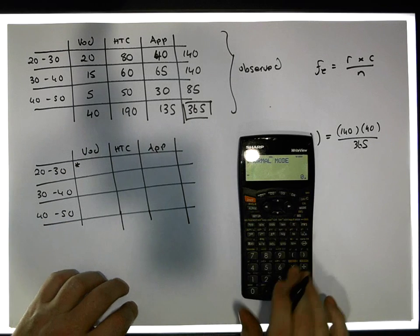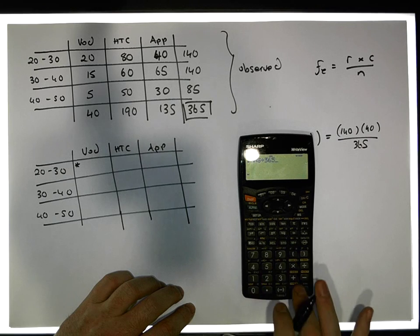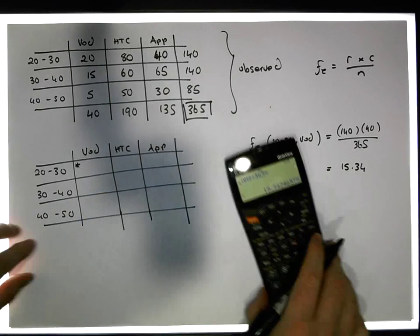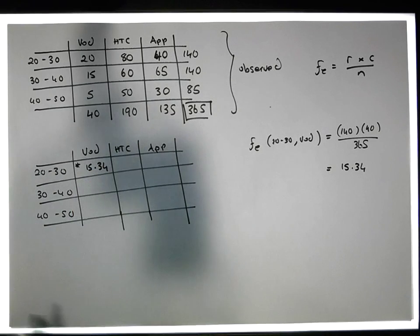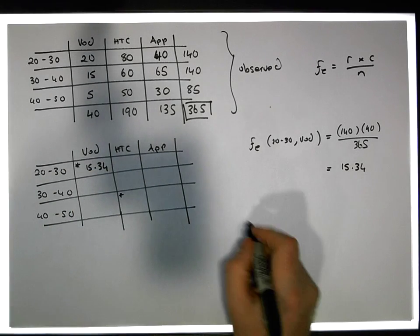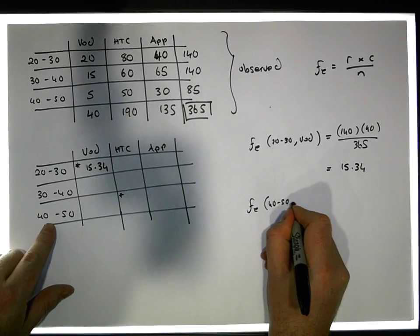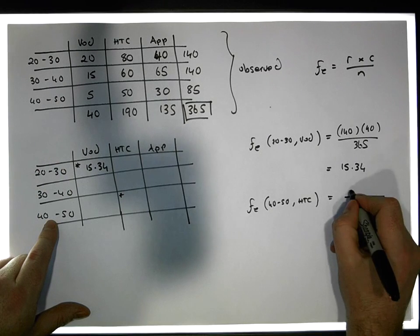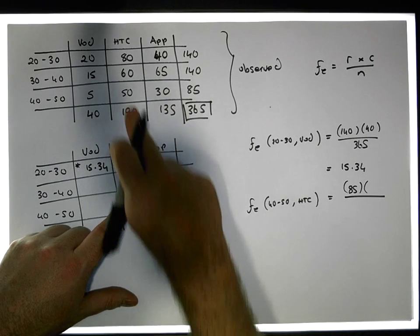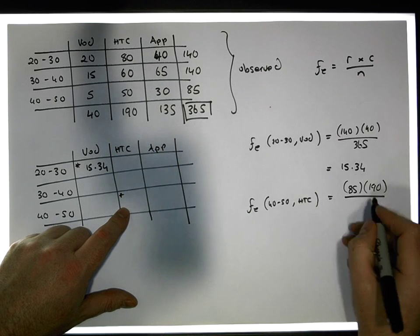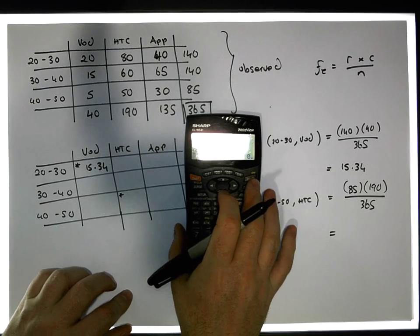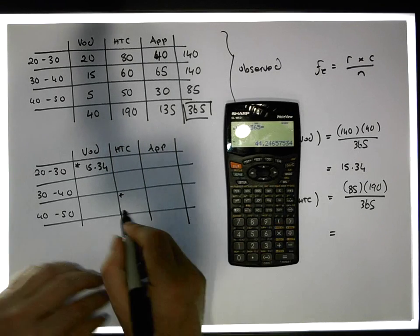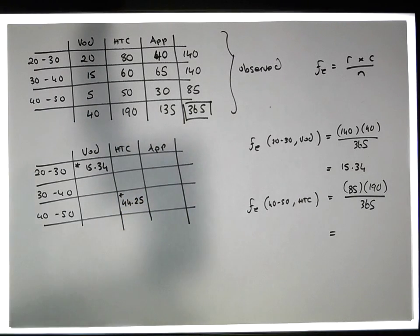For the 20 to 30 and Vodafone cell: 140 × 40 / 365 gives an expected frequency of 15.34. For the 40 to 50 and HTC cell: the row total is 85 and the column total is 190, so 85 × 190 / 365 gives an expected frequency of 44.25, rounded to two decimal places.